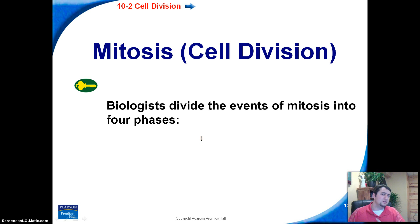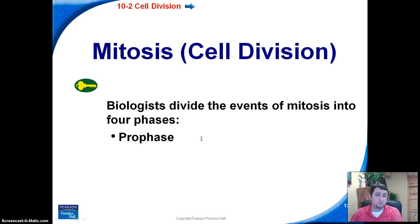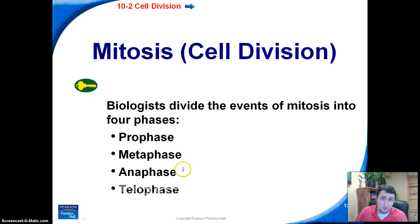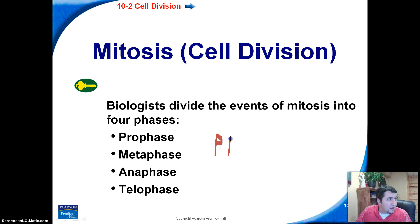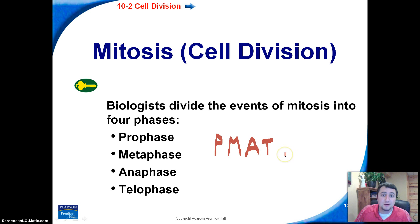Biologists divide mitosis into four major phases: prophase, metaphase, anaphase, and telophase. Those literally spell out PMAT. So if you can associate PMAT — or 'peeing on the mat' — with mitosis, you're going to do great.